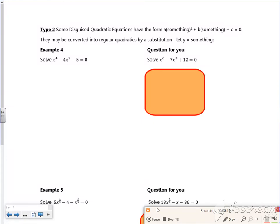This is a disguised quadratic. It is of the form A times something squared plus B times something plus C. What you're looking at is the power on the something being doubled. If you look, this power has been doubled. If the power has been doubled, it's disguised quadratic.